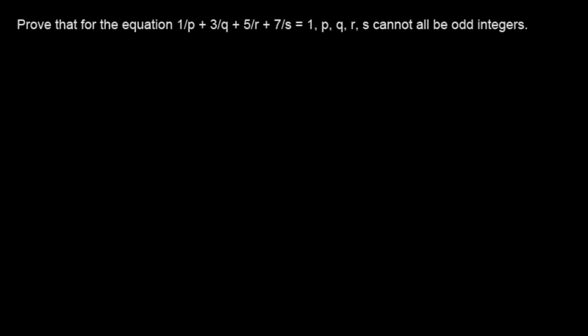Prove that for the equation 1/p + 3/q + 5/r + 7/s = 1, p, q, r, s cannot all be odd integers.